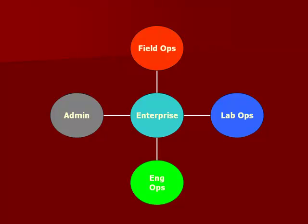Turning now to the major areas of production in the traditional geotechnical firm, starting at the top of the page we have field operations, followed by lab operations going around clockwise, then engineering ops, and then admin. Field operations consist generally of the drilling function and all other field activities associated with getting the jobs drilled.